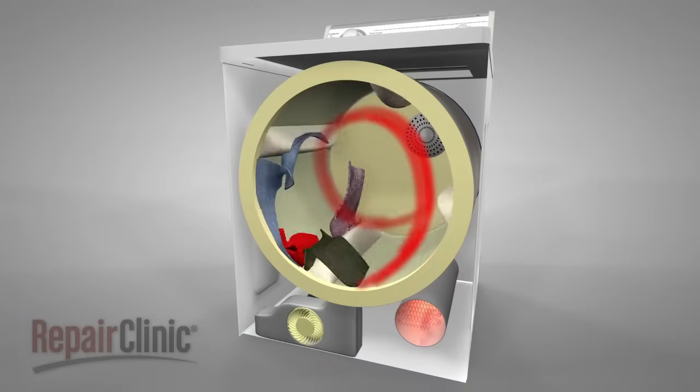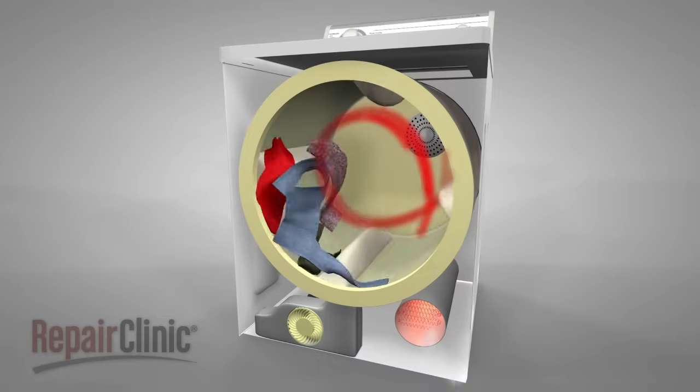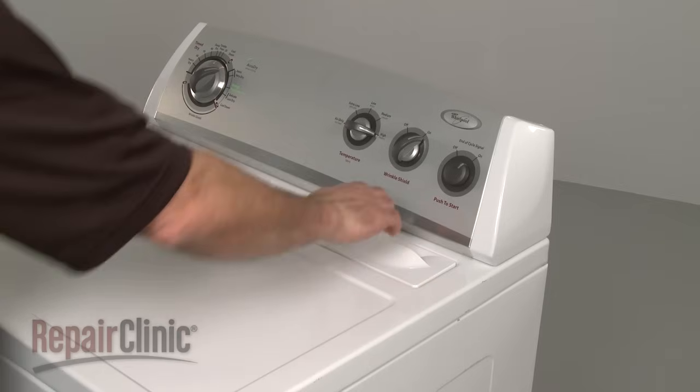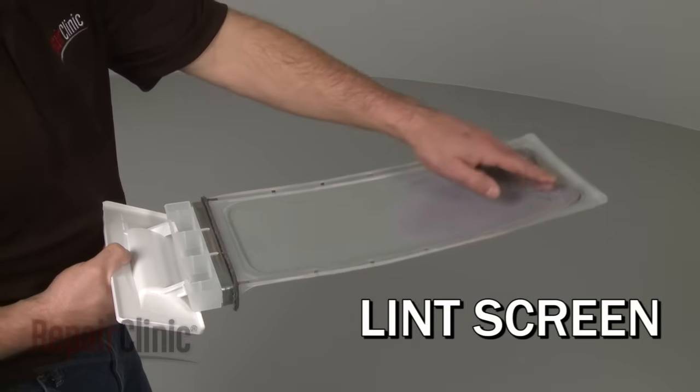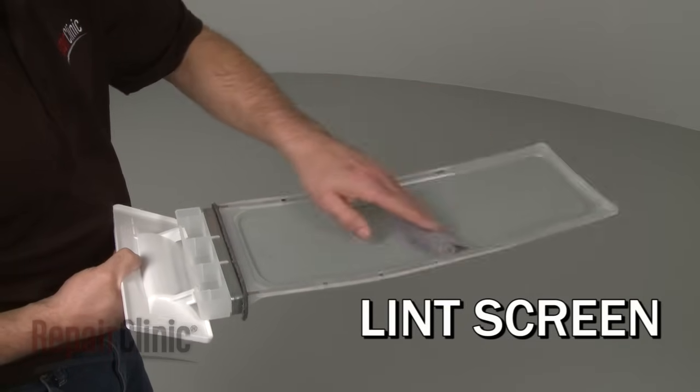If functioning properly, the heated air is pulled evenly through the tumbling clothes, and then through a lint screen. To maintain proper airflow, it's important to clean the lint screen after each load.